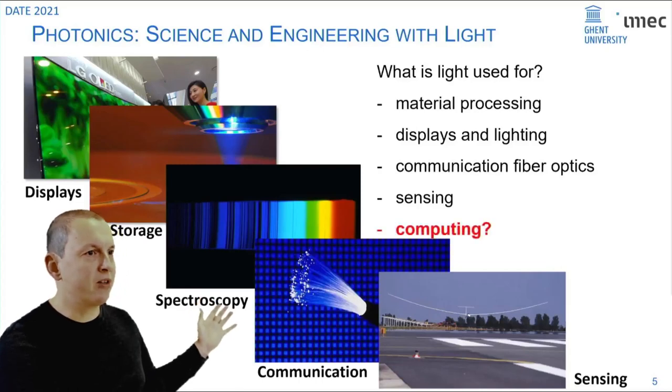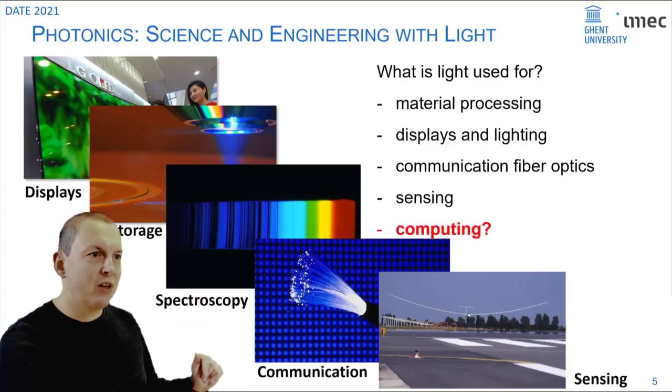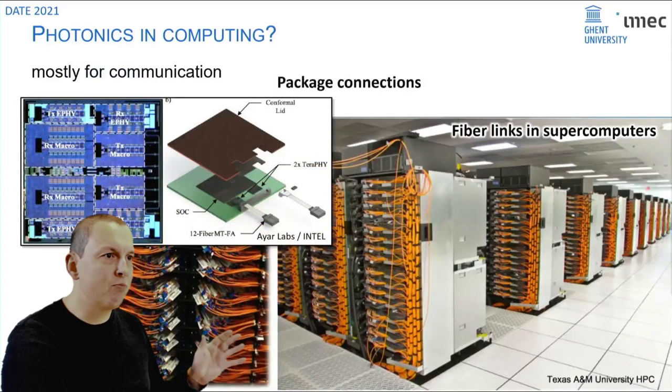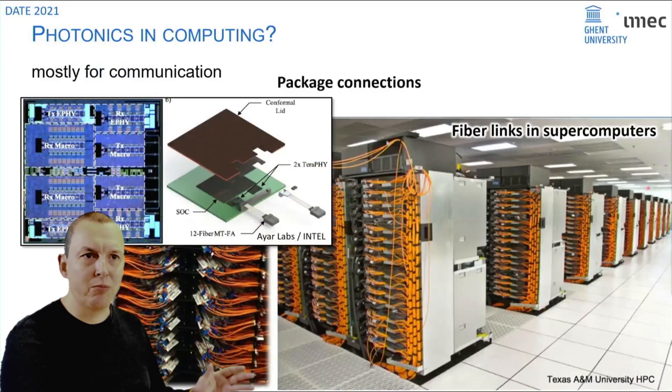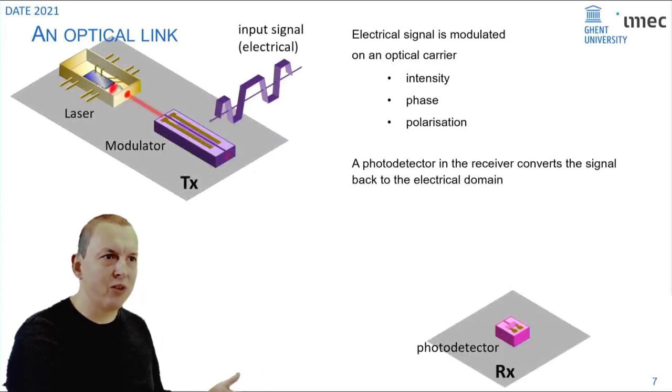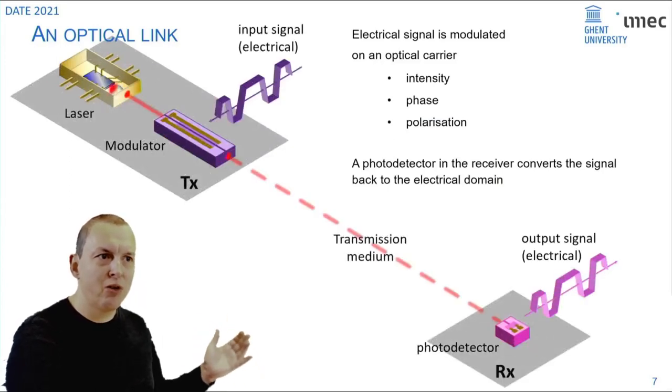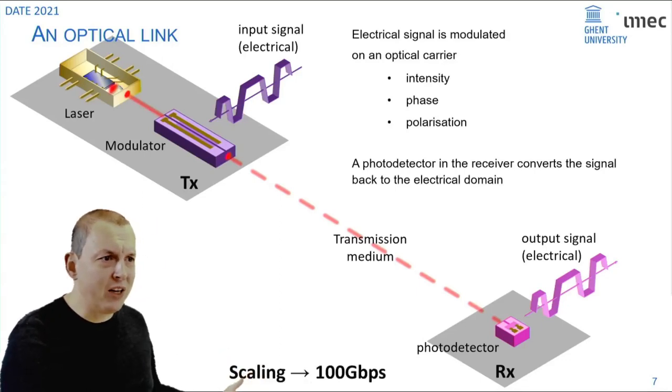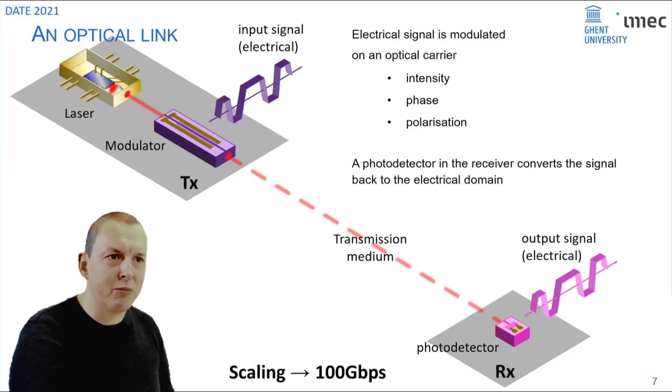Can we use photonic integrated circuits for computing? If we look at where photonics is used in computing nowadays it's mostly in the interconnects and that's logical because photonics is really good for transferring information. An optical link is very simple. You take a light source like a laser, you put a high speed electrical signal onto it and then at the output you convert with a photo detector that modulated light back into a high speed electrical signal and these electrical signals can be up to 100 gigabit per second.